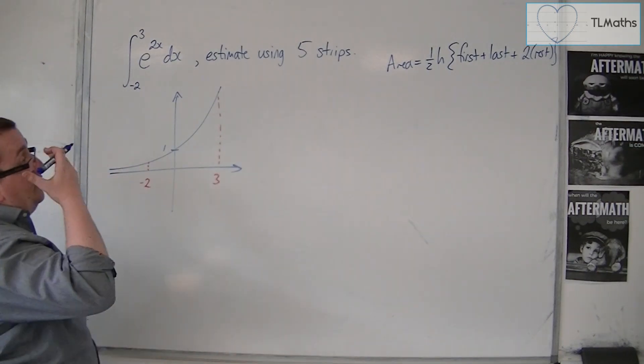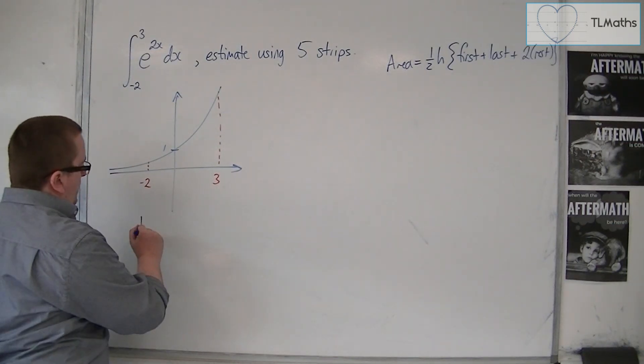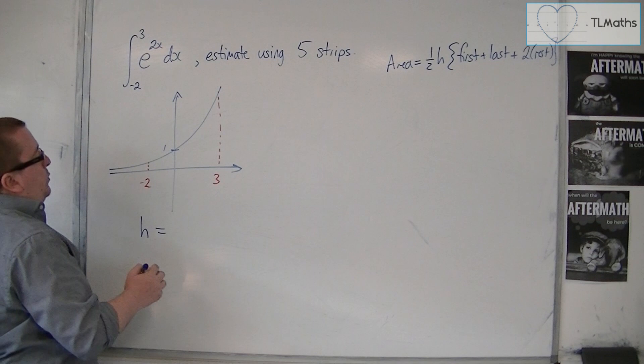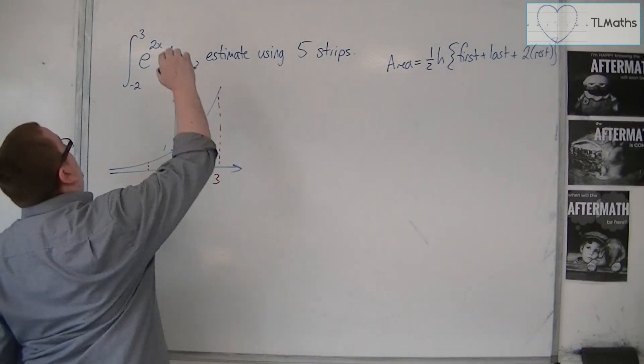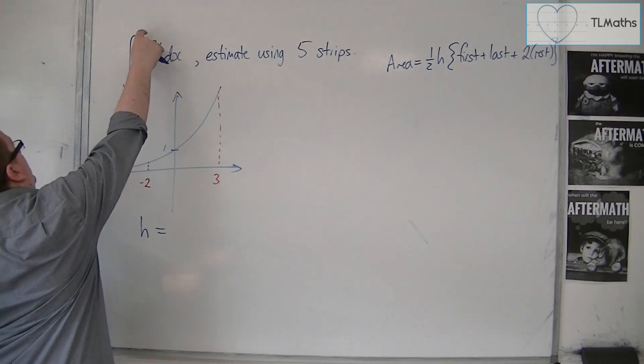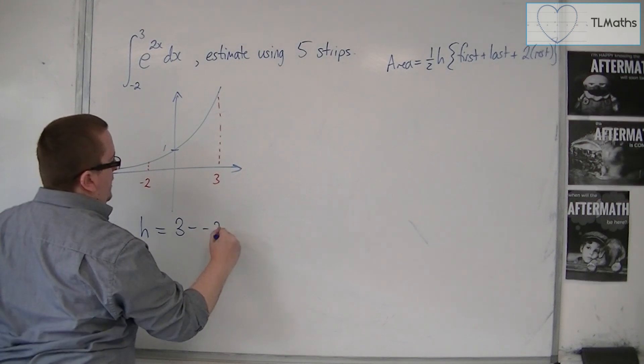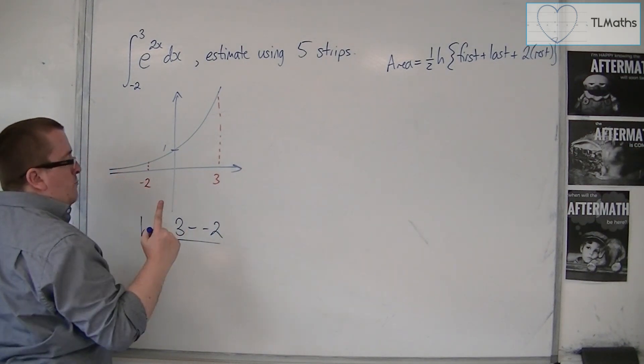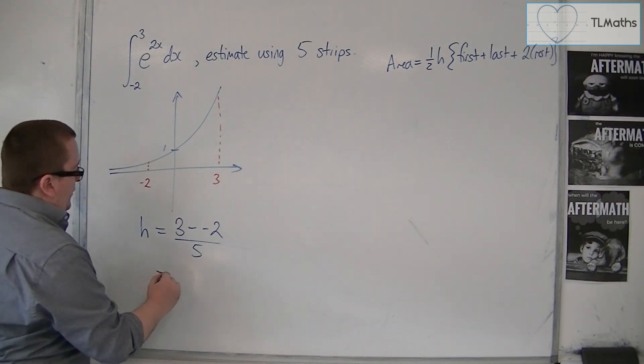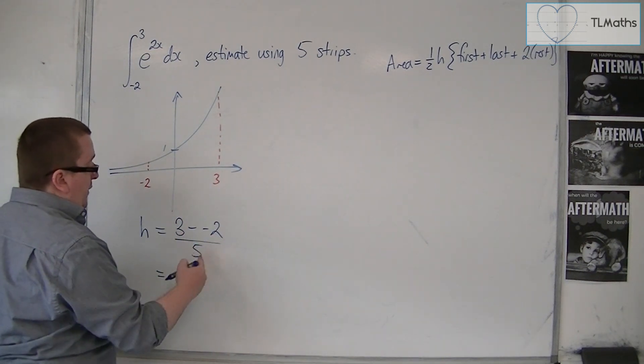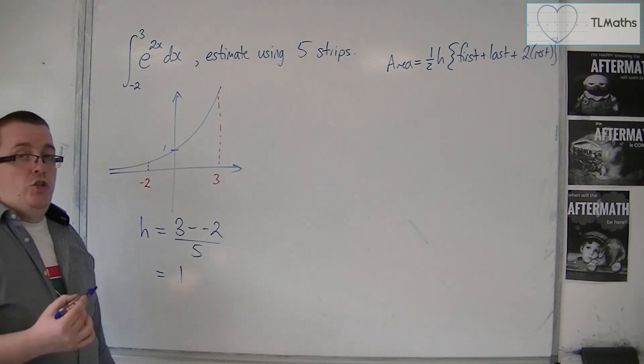The first thing to do is to work out your strip length, h. So h is equal to b minus a over n. That means it's the top number in your integral, the top limit, take away the bottom one, divided by the number of strips, which in this case is 5. So 3 take away minus 2 is 5, 5 divided by 5 is 1. So h is 1.